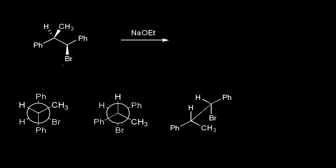The E2 reaction is a stereospecific reaction, which means that the stereochemistry of the substrate determines the stereochemistry of the product because of the mechanism. For time reasons, I have to assume that you're already familiar with the E2 mechanism and that you understand Newman projections and Sawhorse projections.